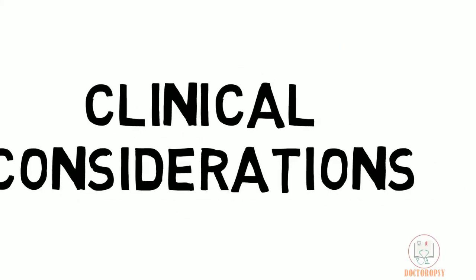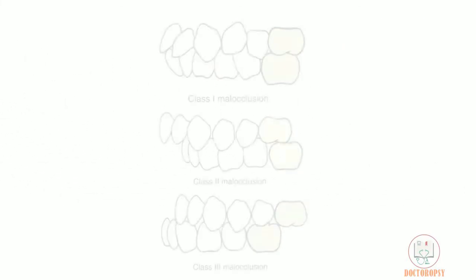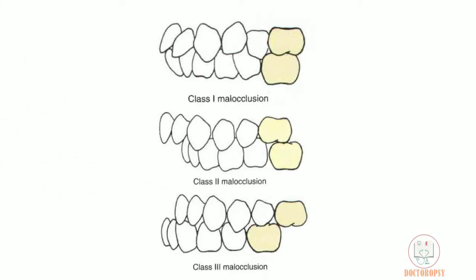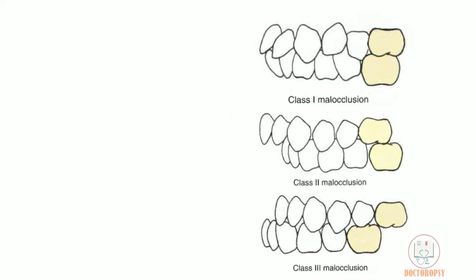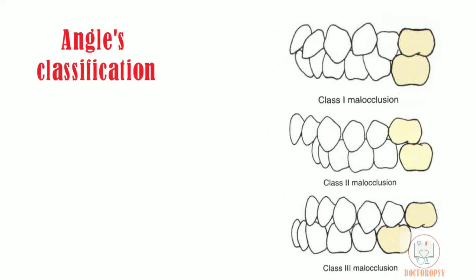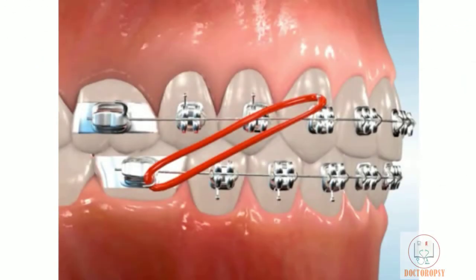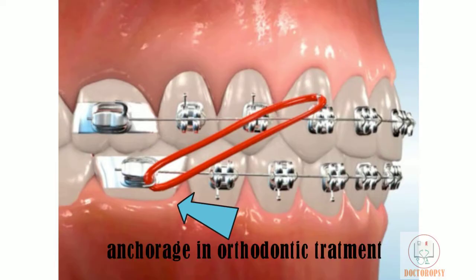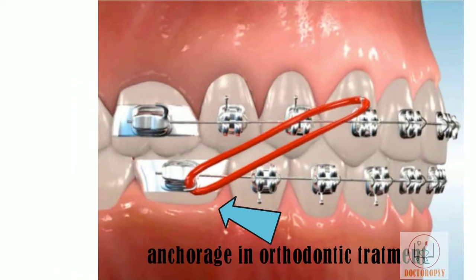Some clinical considerations: the mandibular first molar, along with the maxillary first molar, is used to classify malocclusion in teeth according to Angle's classification. Due to its two strong roots, the mandibular first molar is also used as an anchorage in orthodontic treatment.